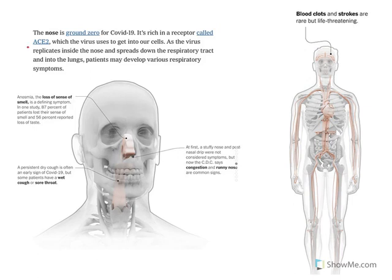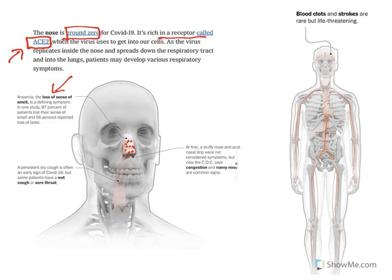COVID-19 attaches to a human cell receptor known as angiotensin converting enzyme 2 (ACE2) receptor. The virus binds with these receptors, gets into the cell, and causes damage. These receptors are abundantly present in the nose, hence the primary point of attachment is the nose. The nose is known as ground zero for COVID-19. Once it gets inside the cells and damages them, loss of sense of smell — known as anosmia — occurs. This is the primary symptom of COVID-19.